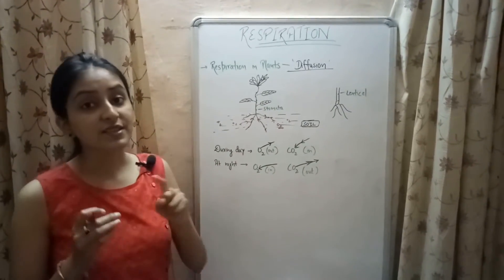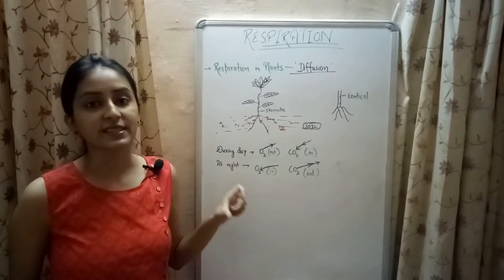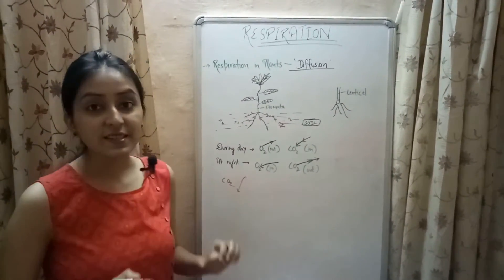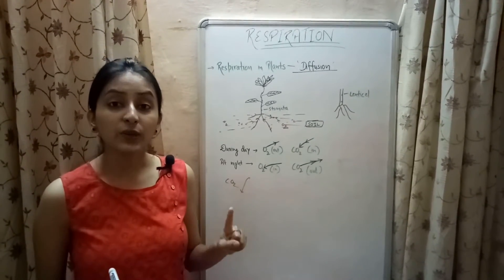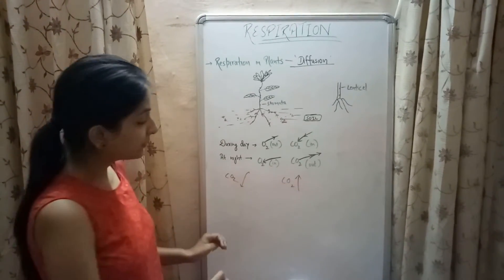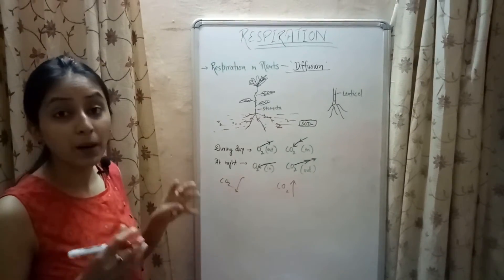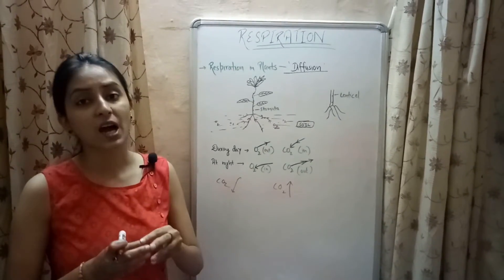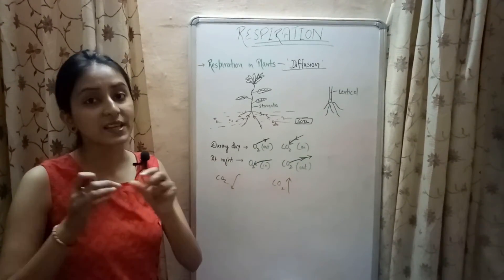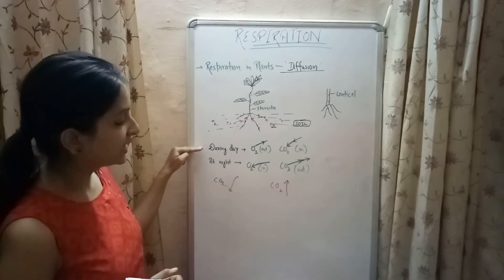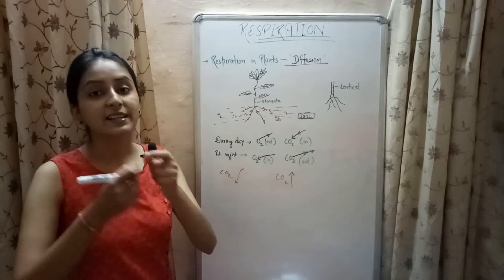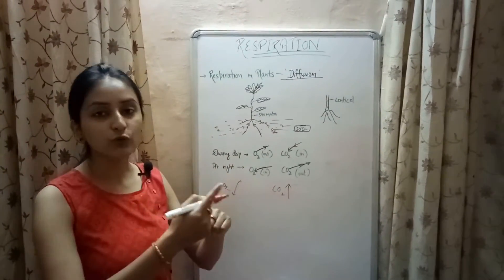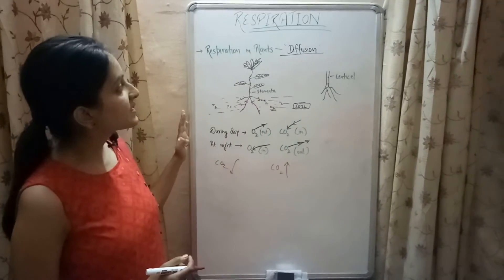Respiration occurs in plants both day and night, whereas photosynthesis occurs only during the daytime. During photosynthesis, carbon dioxide is absorbed by the plants. During the daytime, respiration is also occurring, releasing carbon dioxide. So during the daytime carbon dioxide is both released and absorbed, but the amount absorbed through photosynthesis is much larger than the amount released through respiration. Therefore, during the daytime oxygen is released by the plant, while at night only respiration takes place, so carbon dioxide is released and oxygen is absorbed.